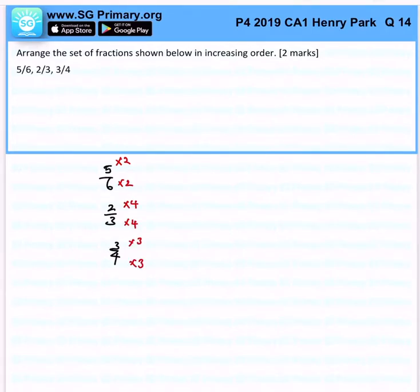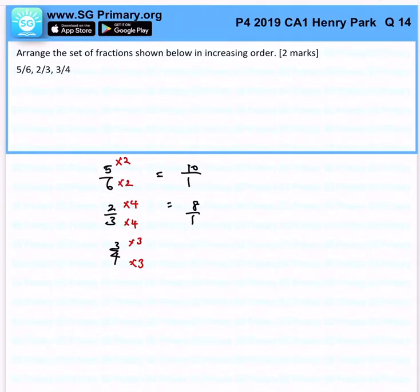What you'll realize is that the first fraction would be 10 over 12, the second would be 8 over 12, and the third would be 9 over 12.